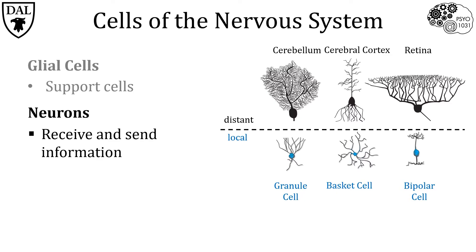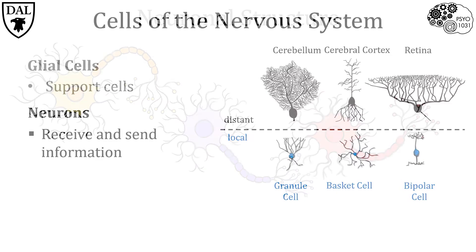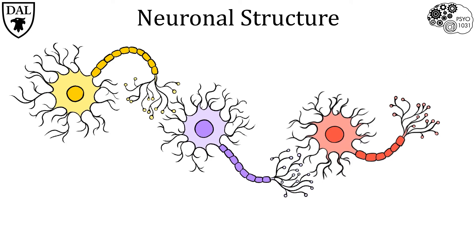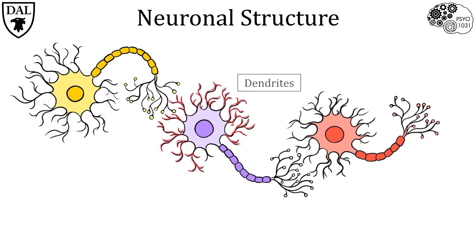Now that we understand the importance of neuronal shape, let's take a closer look at how we describe the cellular structure of a typical neuron. Despite their diversity in size and structure, neurons all share common features. The soma, also called the cell body, contains the nucleus and other cellular machinery necessary for the housekeeping functions that all cells need to maintain.